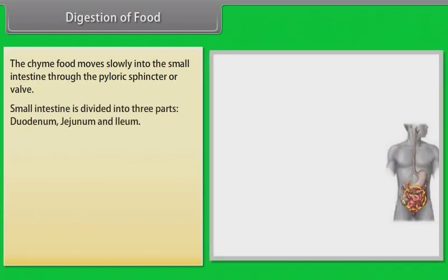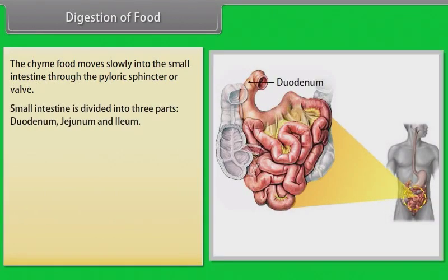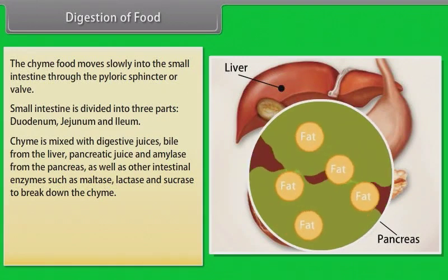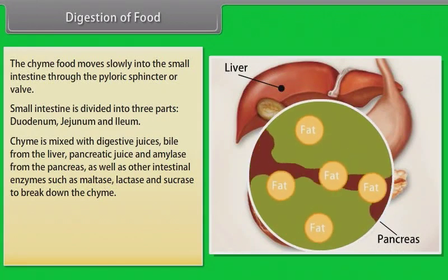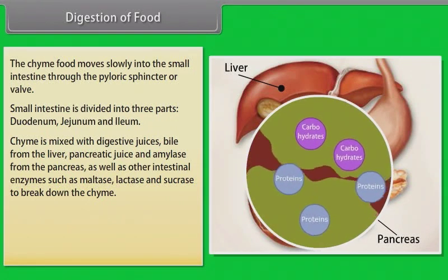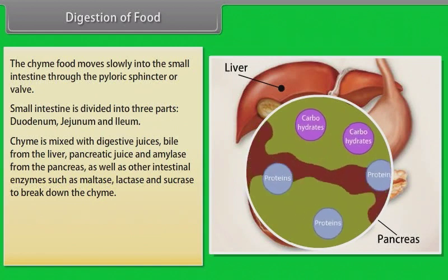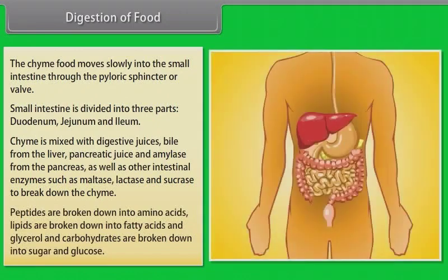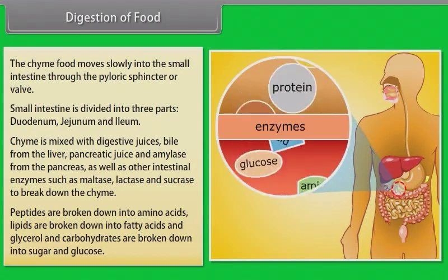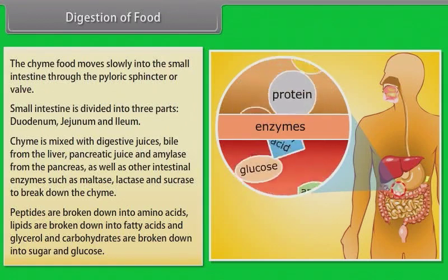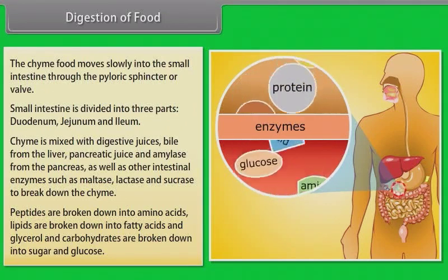The small intestine is divided into the duodenum, jejunum, and ileum. Chyme is mixed with digestive juices — bile from the liver, pancreatic juice and amylase from the pancreas, as well as intestinal enzymes such as maltase, lactase, and sucrase — to break down the chyme. Peptides are broken down into amino acids, lipids into fatty acids and glycerol, and carbohydrates into sugars and glucose.